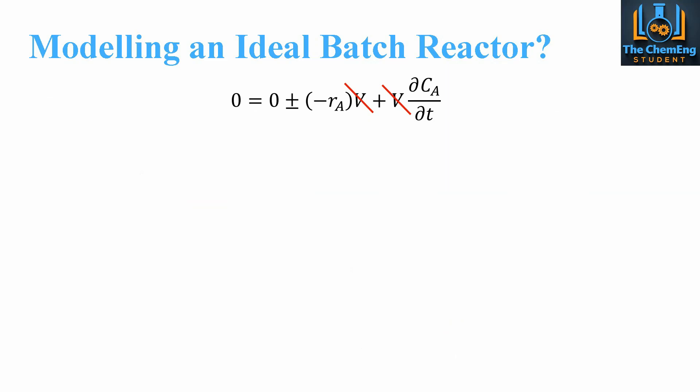We can cancel out the volumes, and when we rearrange, we have -dC/dt equals plus or minus the rate of the reaction. If we rearrange for t in this system, we'll get the batch time that corresponds to an ideal batch reactor.